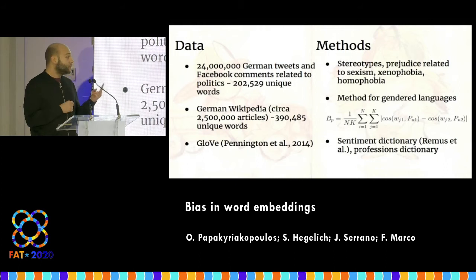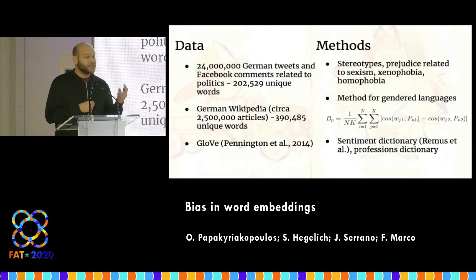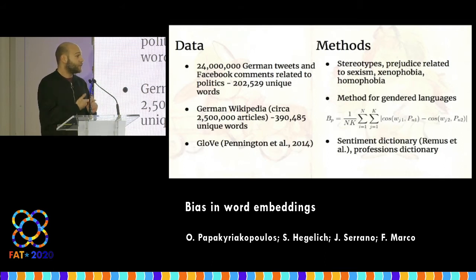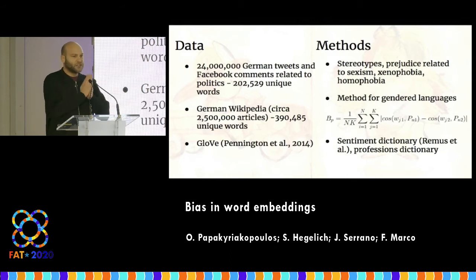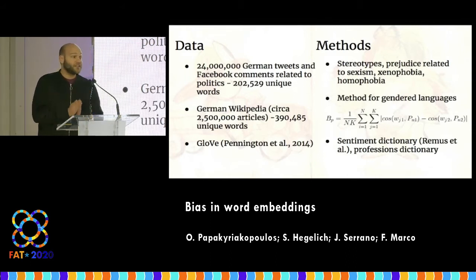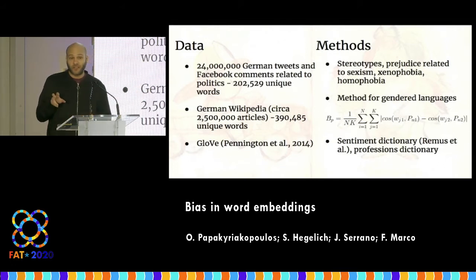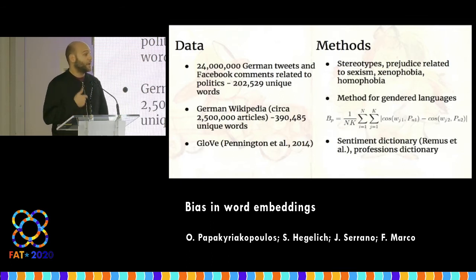So what did we do? We developed two word embedding vector datasets: one trained on German Wikipedia and one trained on 24 million Facebook and Twitter comments. We wanted to trace biases related to social discrimination. Social discrimination is imprinted in language through statements of stereotypes and prejudice in text. We searched for biases related to sexism, xenophobia, and homophobia.